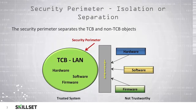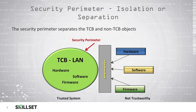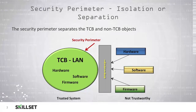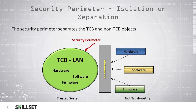Typically when we are using a trusted computing base, we will have a security perimeter that separates our TCB from any other objects that are not part of our trusted computing base. As you can see in the picture below, we have a trusted computing base local area network which has our trusted system of hardware, software, and firmware. We then have an interface that separates that TCB from any non-trustworthy hardware, software, and firmware. You can see that security perimeter keeping everything that is considered very secure from leaking into a non-secure system.